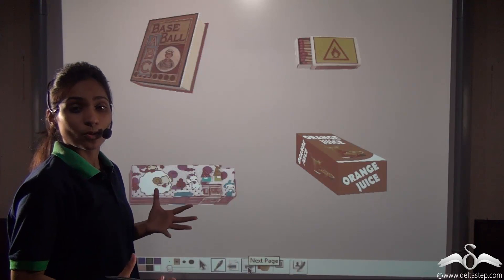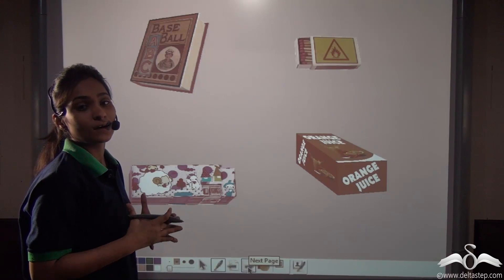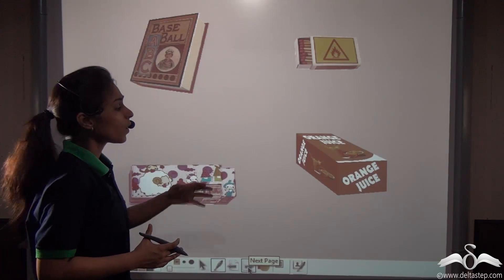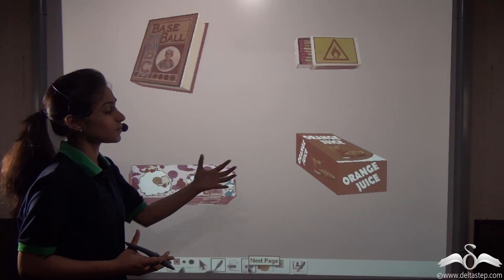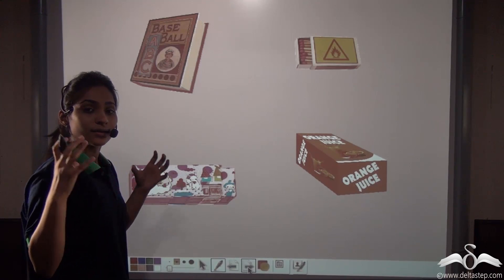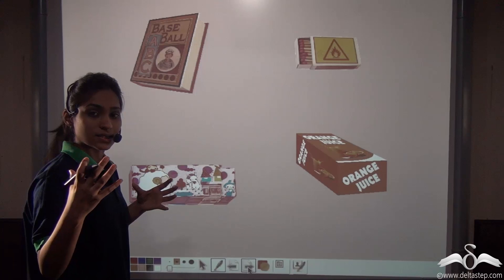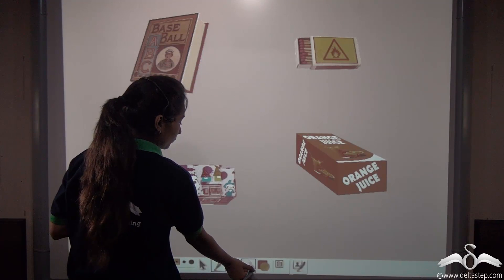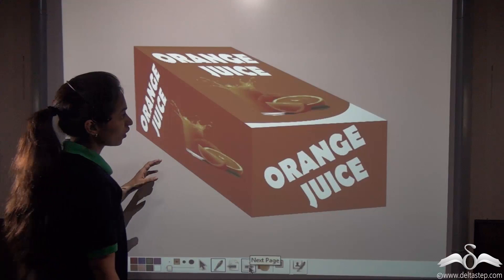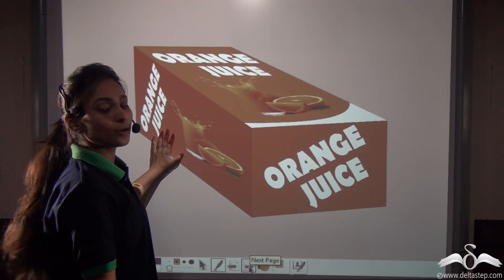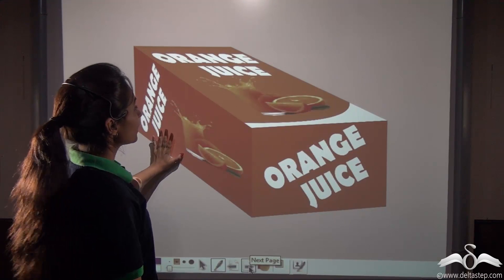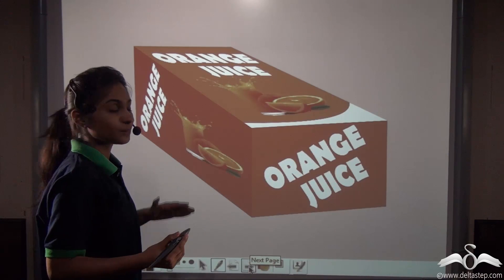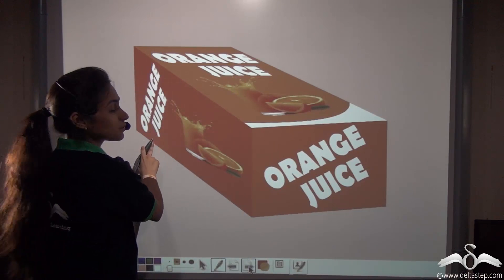We come across cuboids a lot in our daily life, such as this book, mastic boxes, pencil boxes, and juice boxes. They are rectangles with some thickness or height. Now let's take the example of this juice box. You can see that the face of this juice box represents a rectangle, and it is having some thickness as well.